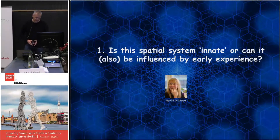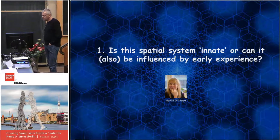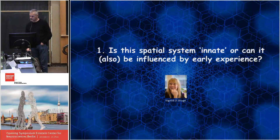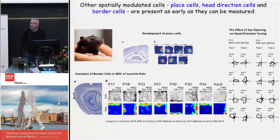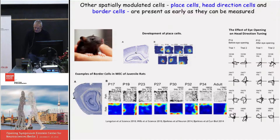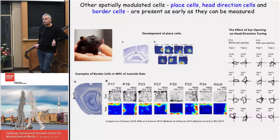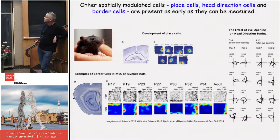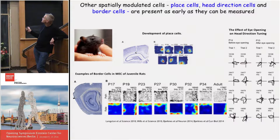A question I want to ask is: to what extent does this system of functionally specific cells depend on developmental processes, and to what extent is experience involved? One could address that by asking when cells with such functional properties appear during development. In rats, many of these cells are present as early as it's possible to record them — essentially when rats start leaving the nest at approximately 2 to 2.5 weeks of age.